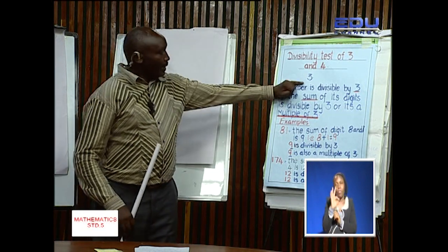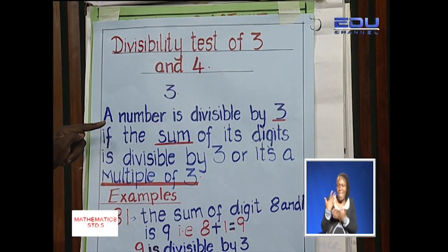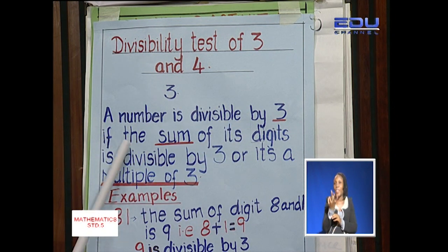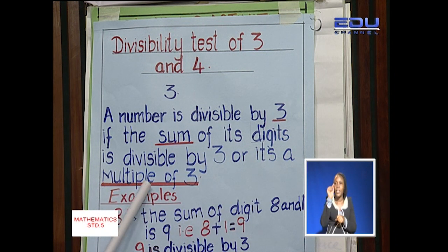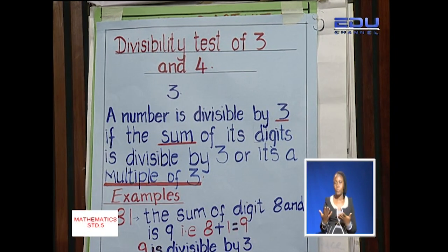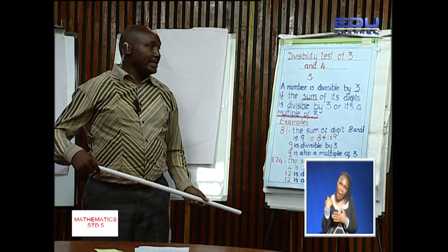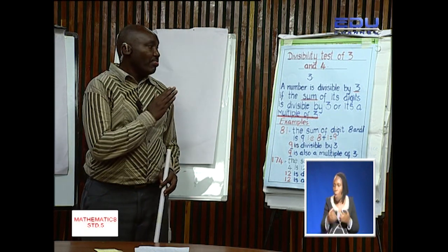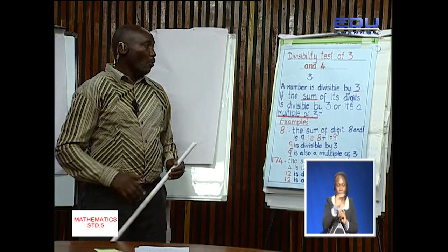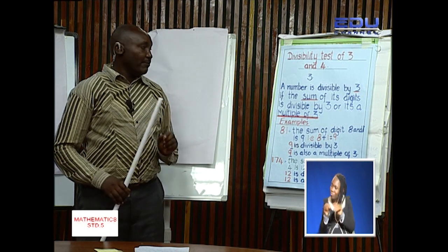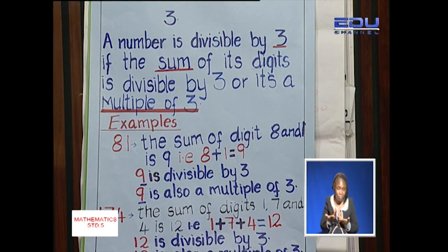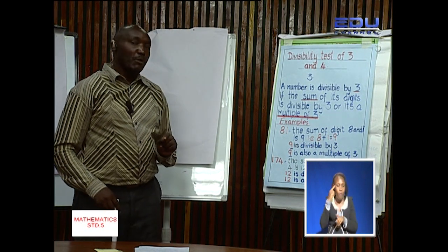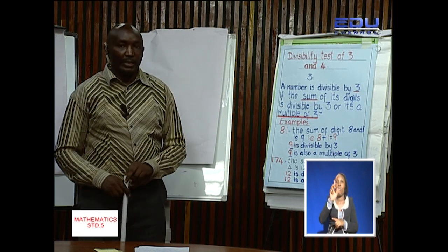Now, any number is divisible by 3 if the sum of its digits is divisible by 3, or if it is a multiple of 3. In other words, if you are given any number, you can check whether it is divisible by 3 by adding the digits of that number and checking whether the sum of those digits is divisible by 3. The other alternative is, if the sum of the digits forms a multiple of 3, then that number is divisible by 3.